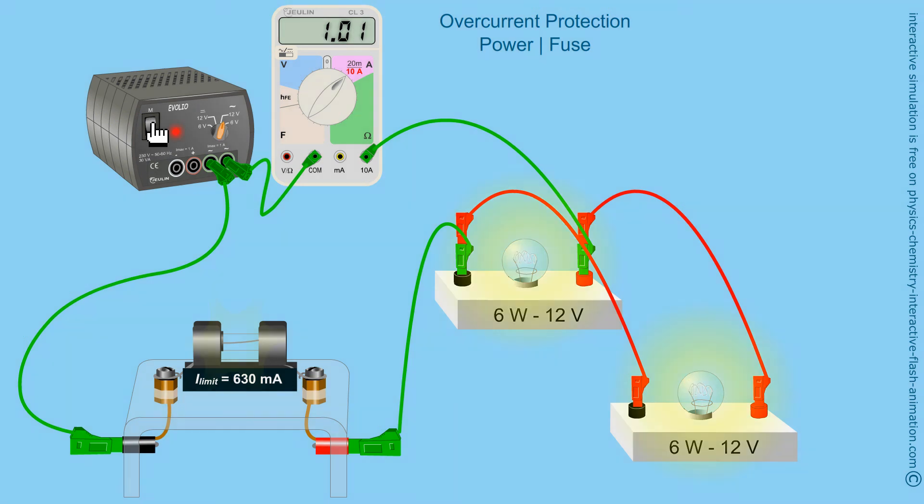The bulbs are intact. It is the role of the fuse to protect the devices. In domestic installations, circuit breakers play this protective role. They do not destroy themselves. Good news.